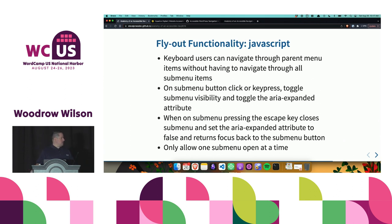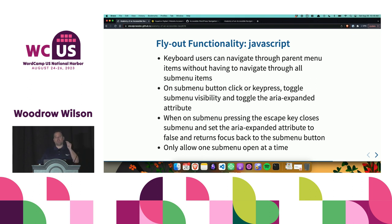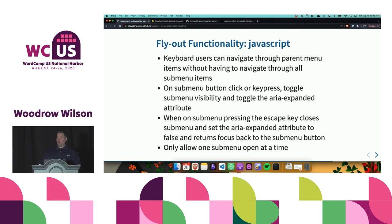Now we get into the flyout functionality JavaScript — what we're trying to achieve. The keyboard user can navigate through the parent menu items without having to navigate through all the sub-menu items. Without custom JavaScript, a keyboard user would still have to tab through every sub-menu item. With large menus or multi-level sub-menus, they'd have to tab all the way through before getting to the next parent. Our approach is to allow a keyboard user to tab straight through all parent menu items unless they choose to go into a sub-menu.